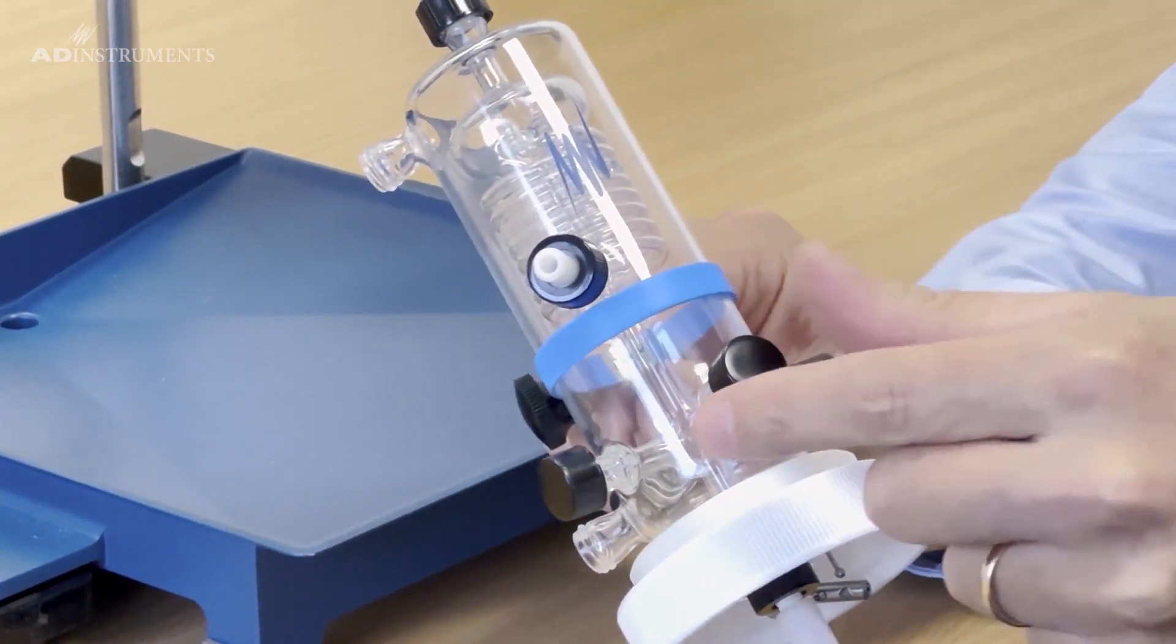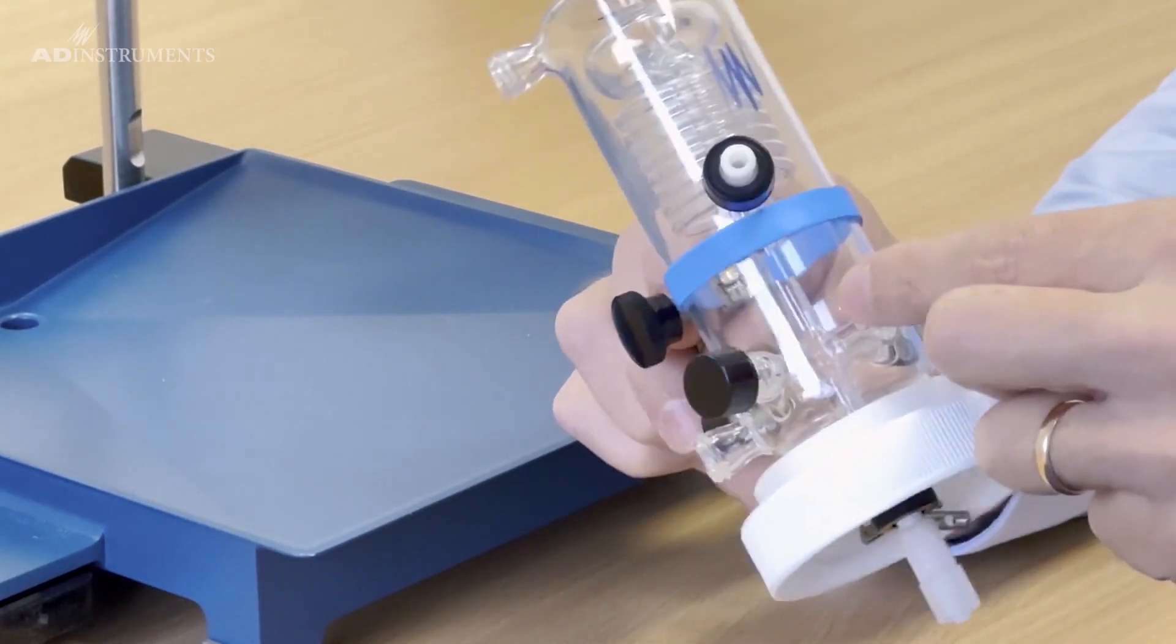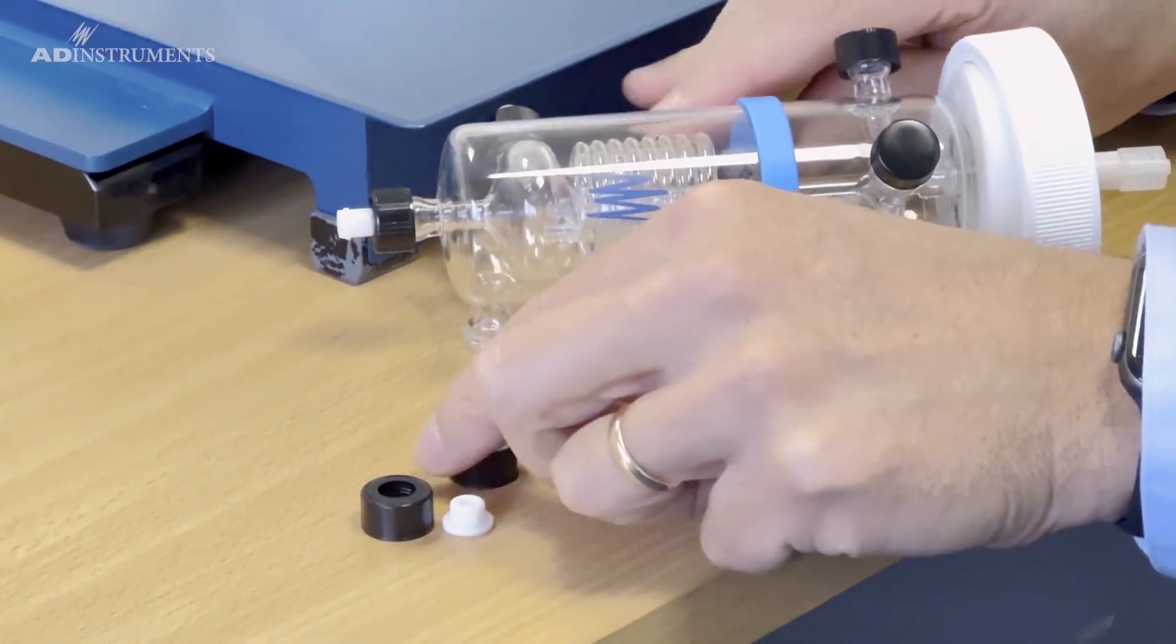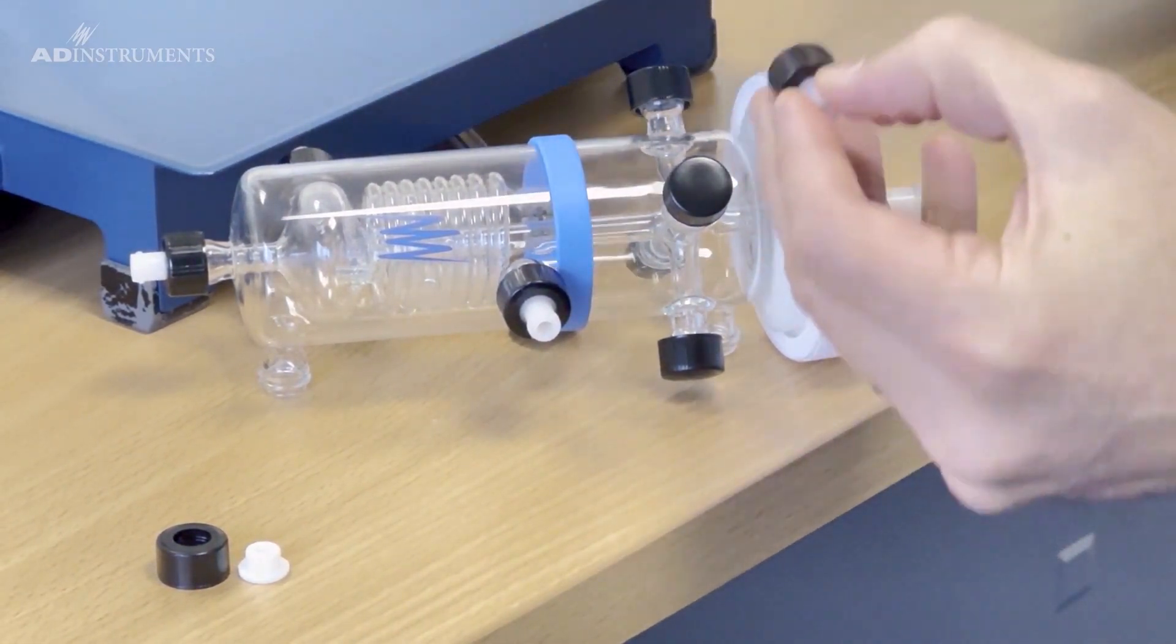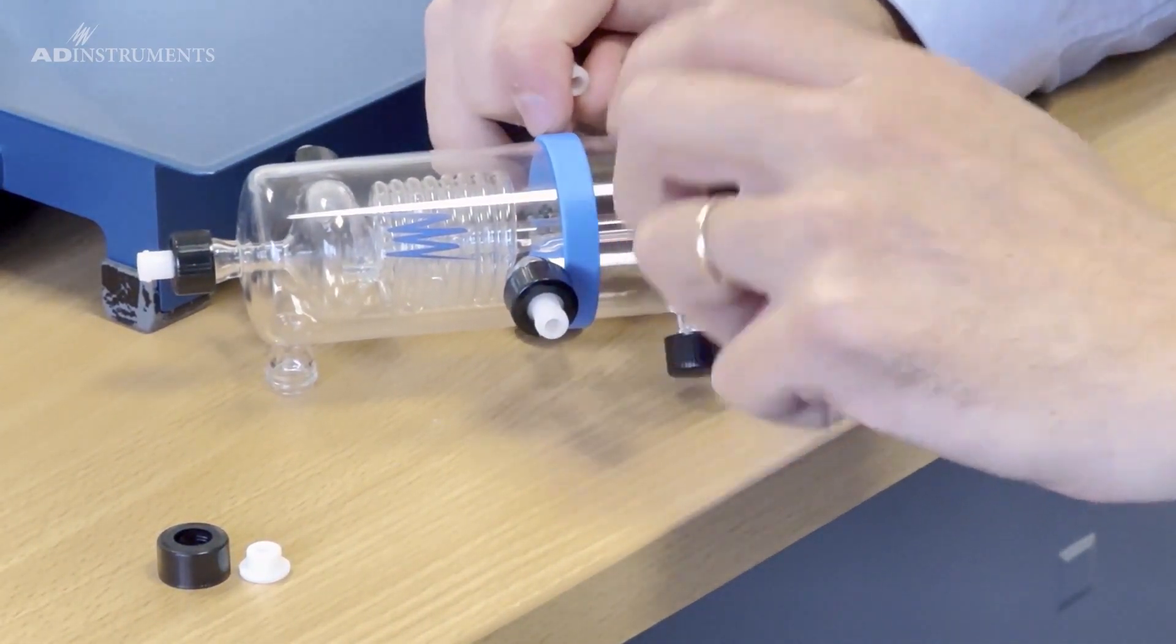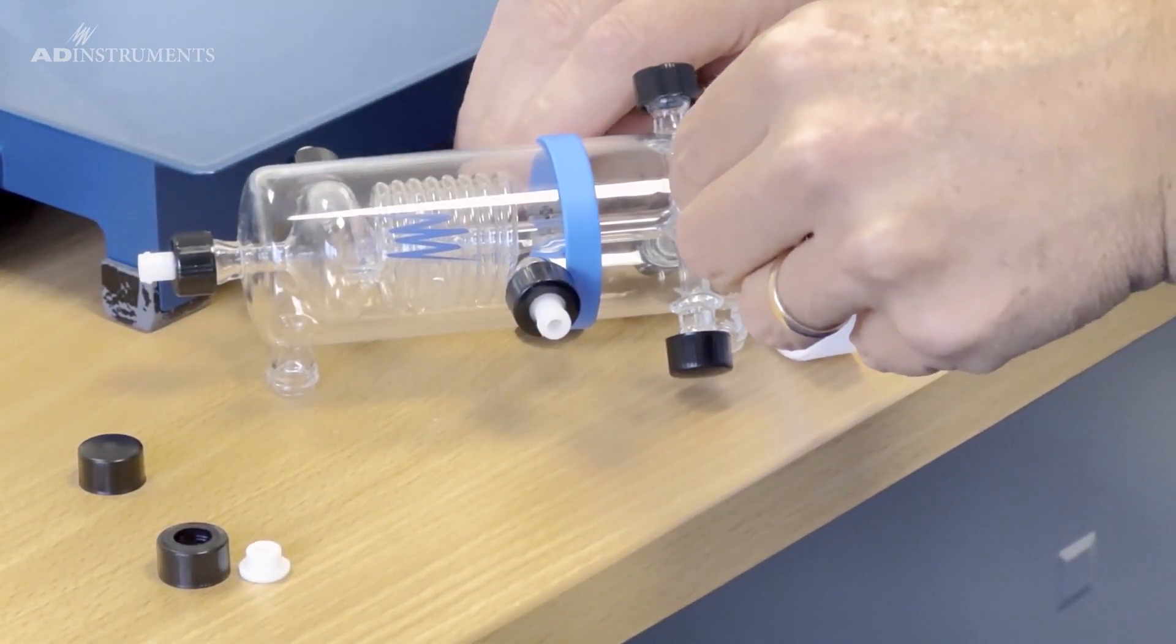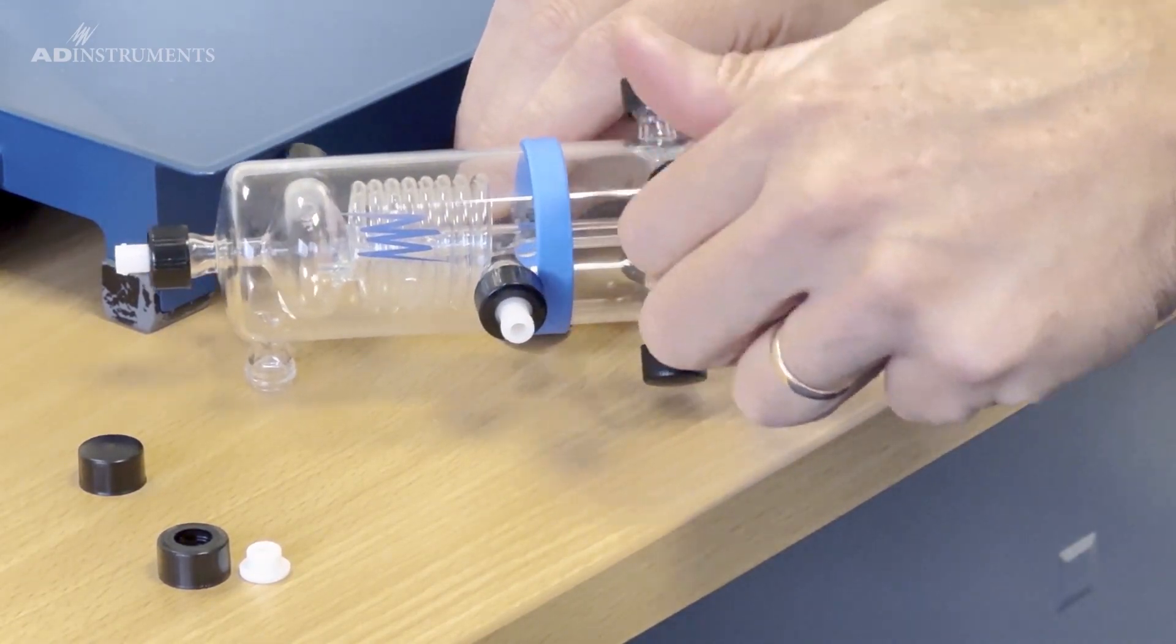Down at the bottom we have four access ports and these ports can be fitted with either a luer fitting such as this one which we can just add in to one of these. This is to attach things like a pressure transducer.